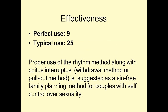Perfect use 9, typical use 25 — that's a huge difference. Proper use of the rhythm method, along with coitus interruptus — the withdrawal or pull-out method, which is not a good method — is suggested as a sin-free family planning method for couples with self-control. When I refer to sin-free, this refers to cultural or religious groups which do not believe in the use of contraceptives to prevent pregnancy.